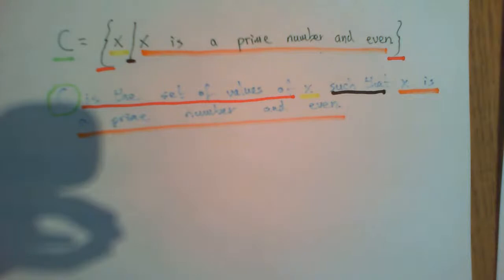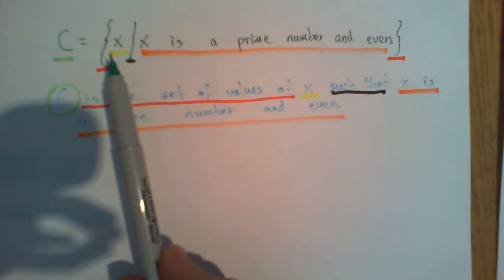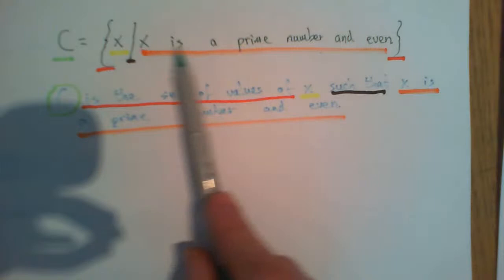I'm going to explain where in this each one of these words exist. So C is there, 'is the set of values of' is the curly brackets, x is that x, 'such that' is that line there, and 'x is a prime number and even' is just written there for you. So I'll read it all to you again: C is the set of values of x such that x is a prime number and even - that's the description of the set.